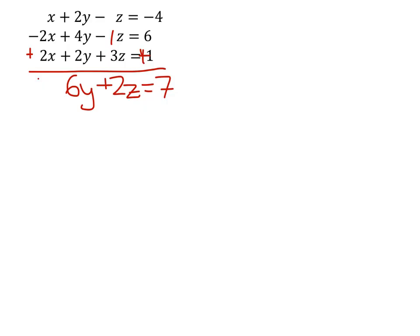That gives us one equation in two variables, and in order to get another equation in two variables, we're going to use this top equation for sure. Then we just need to choose one of these other two equations to use in order to eliminate the x. Let's go ahead and do that right now. I'm going to choose this middle equation.